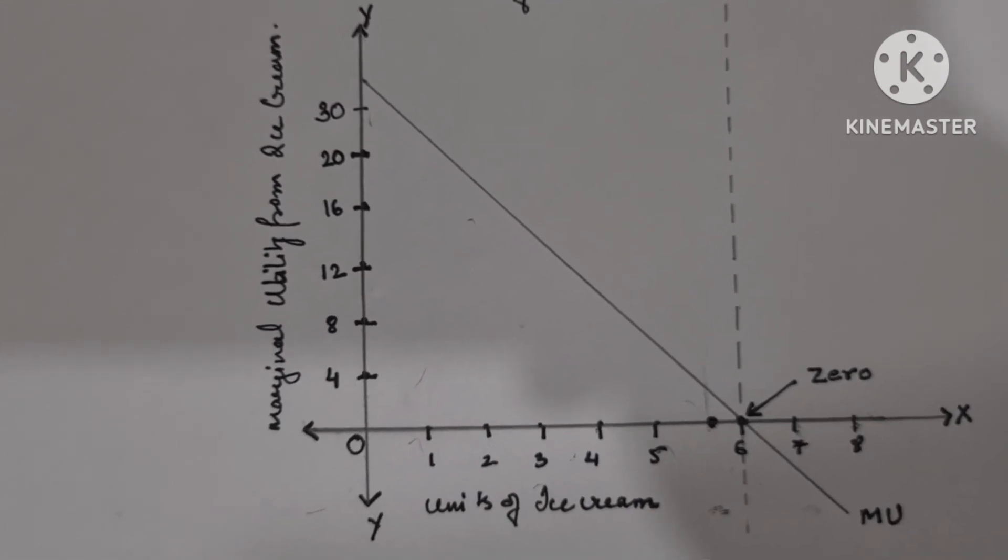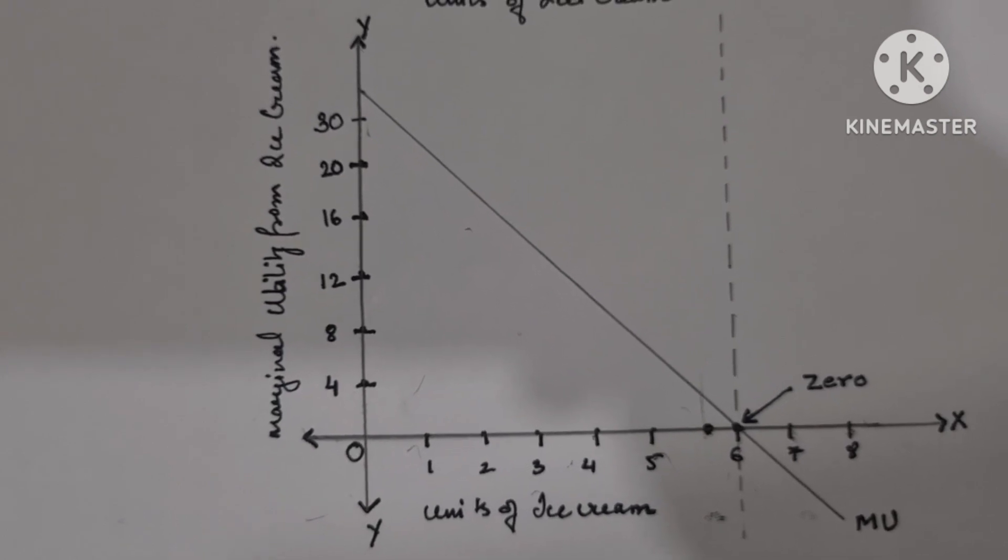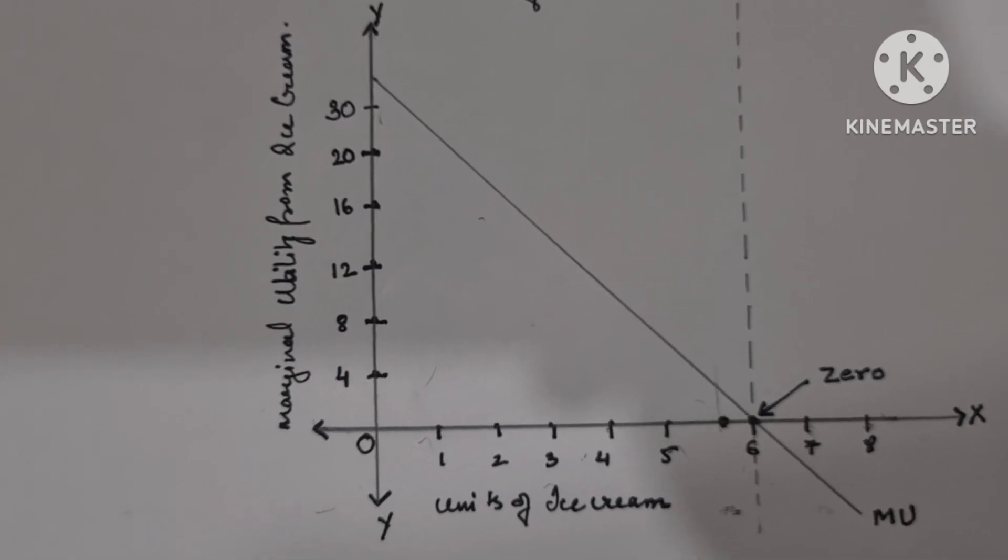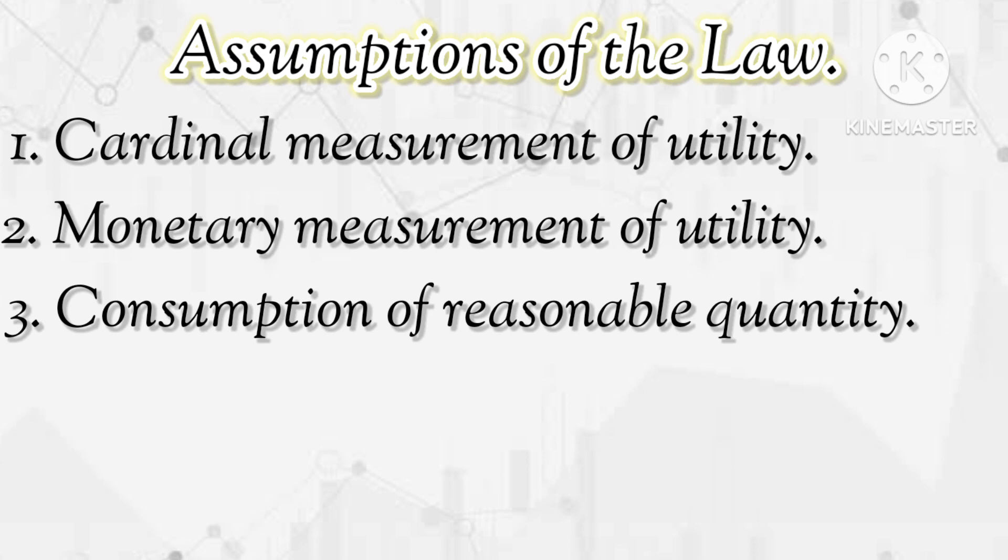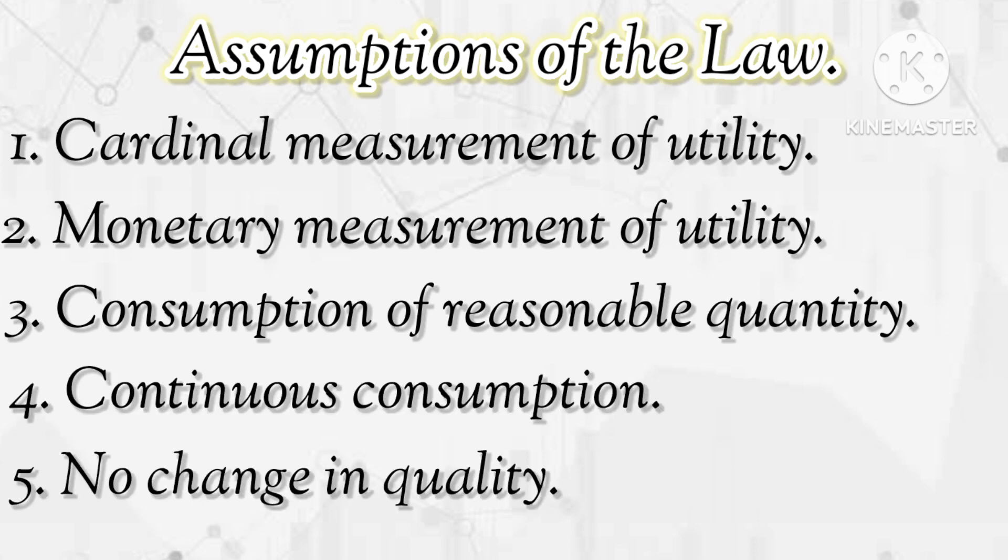Now, we are going to understand a few assumptions of the law. Assumptions of the law. Number one, cardinal measurement of the utility. That means utility can be measured. Number two, monetary measurement of utility. Number three, consumption of reasonable quantity. Number four, continuous consumption. Number five, no change in the quality.